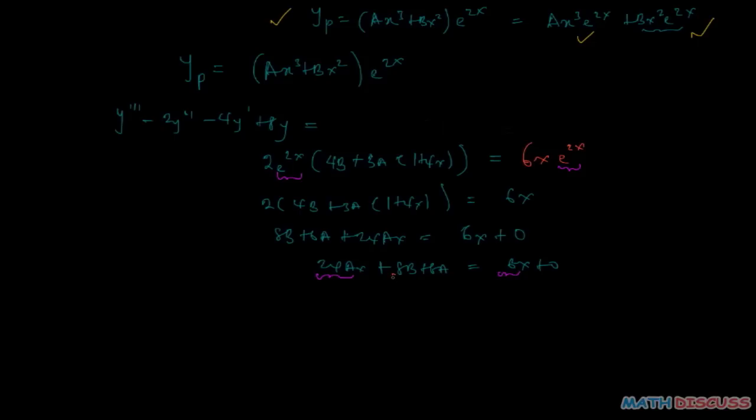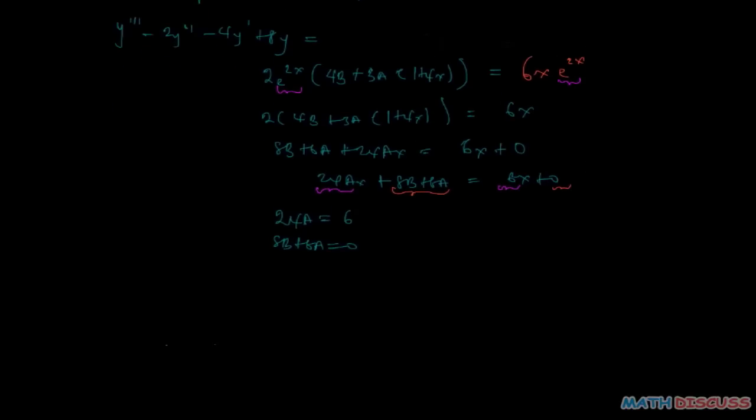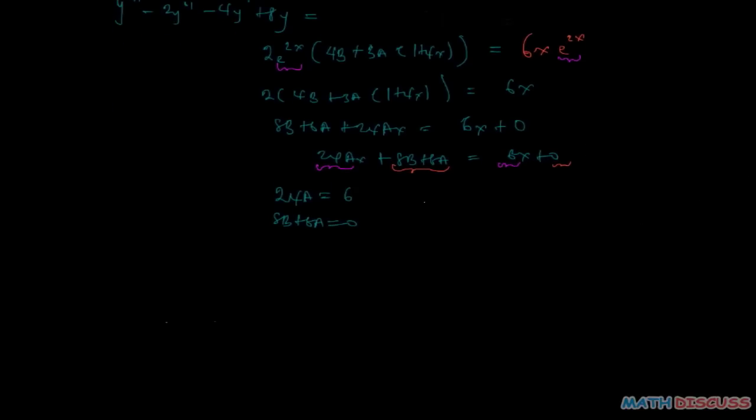So we compare coefficients. The coefficient of x is 24a equals the coefficient here is 6. The constant here is 8b plus 6a while the constant here is 0. And then when we solve that simultaneous equation, what we have is, on solving, we'll have our a to be equal to 1 over 4 and then our b to be equal to minus 3 over 16.